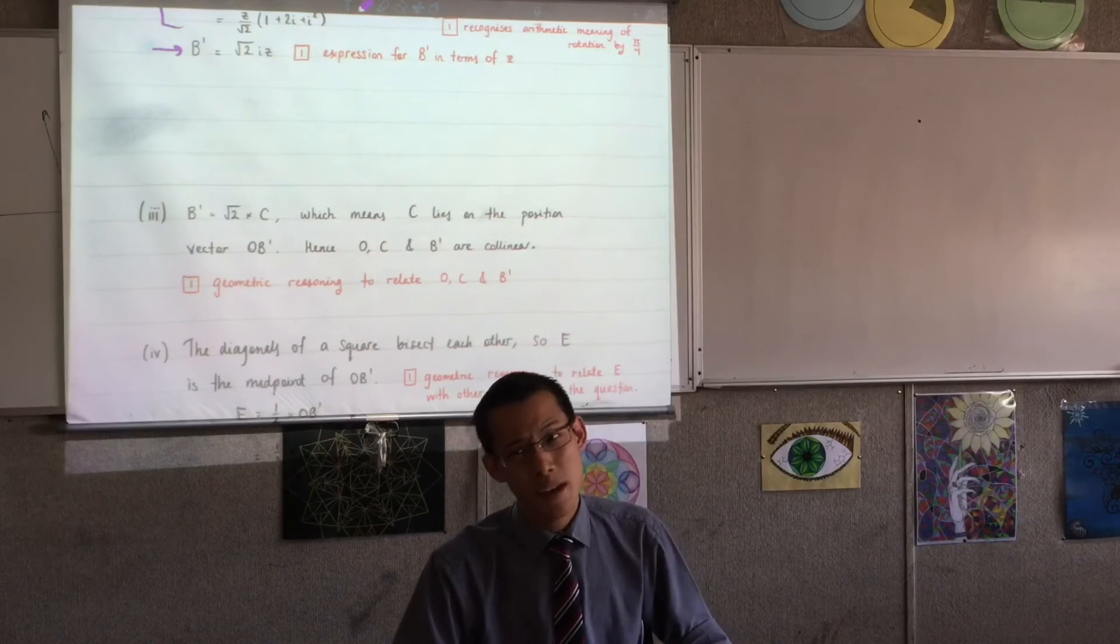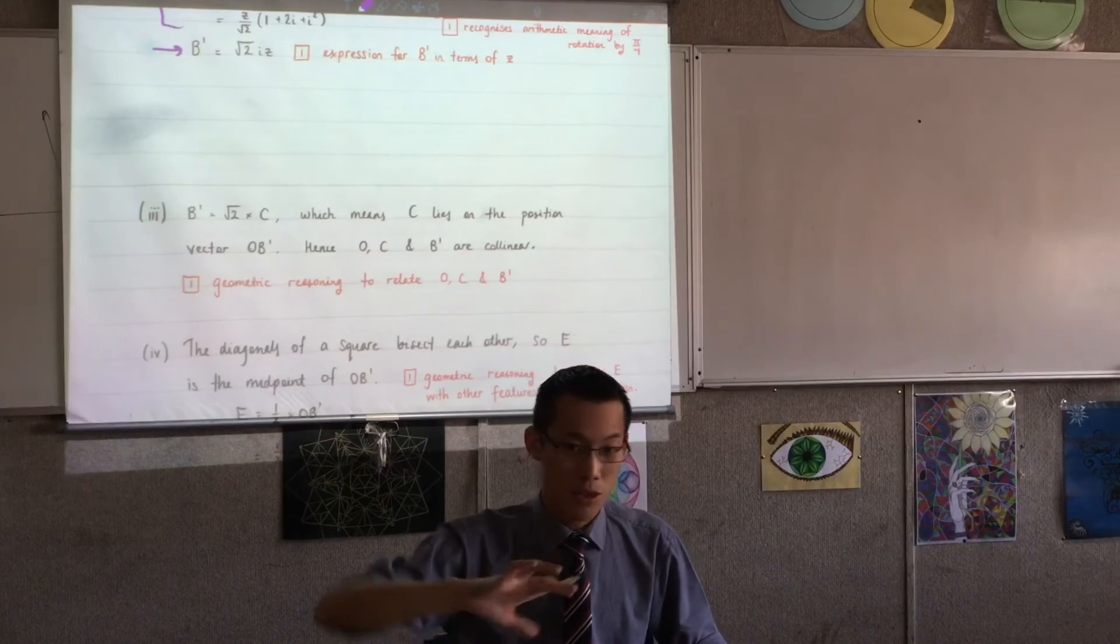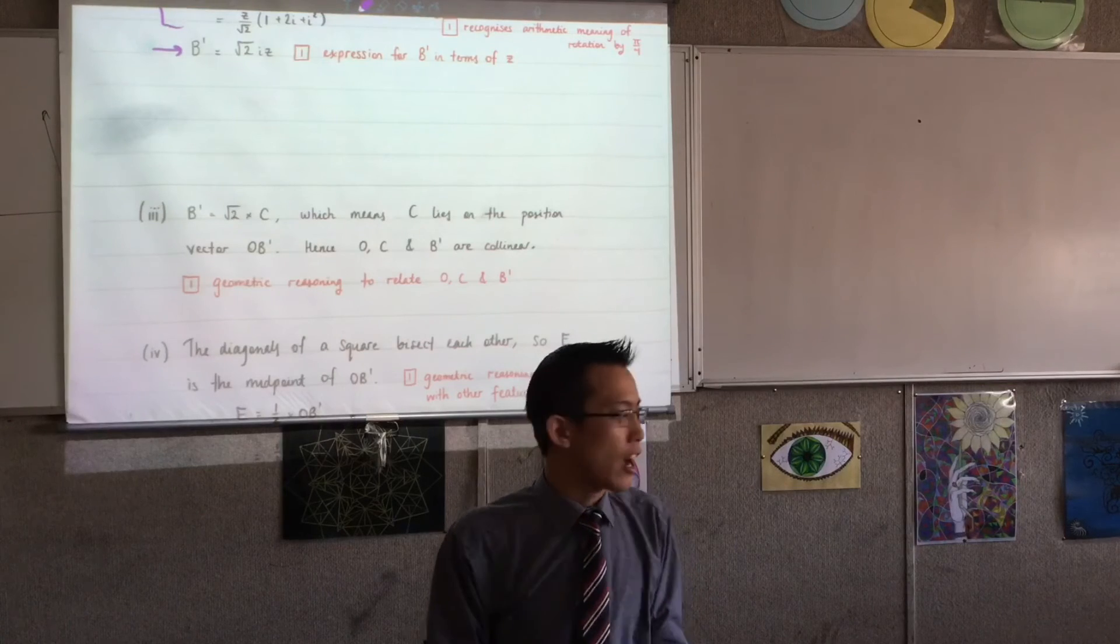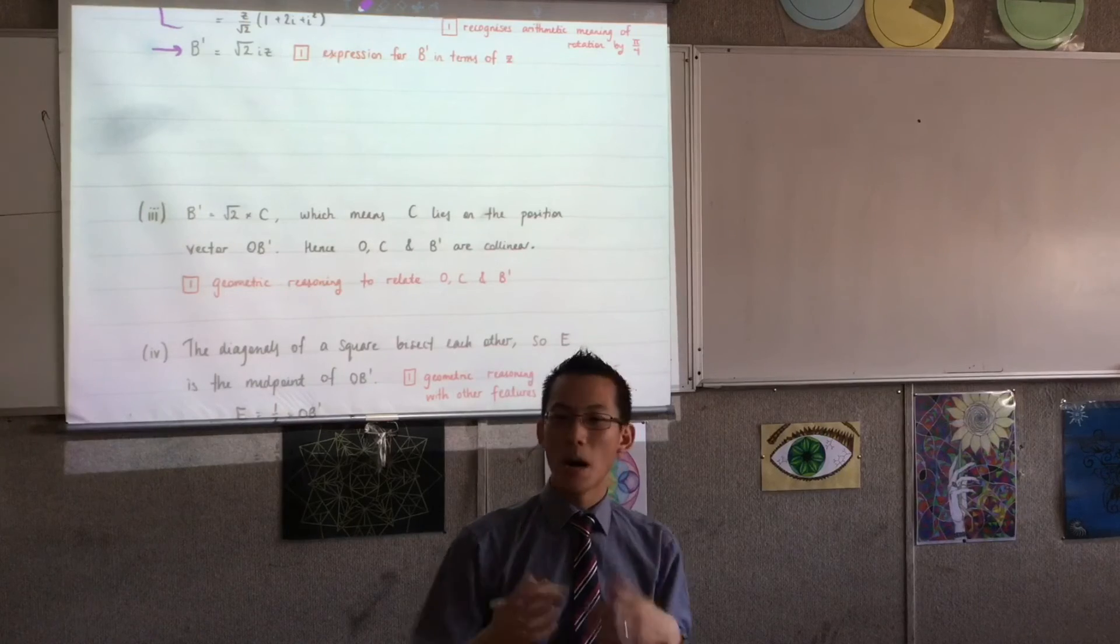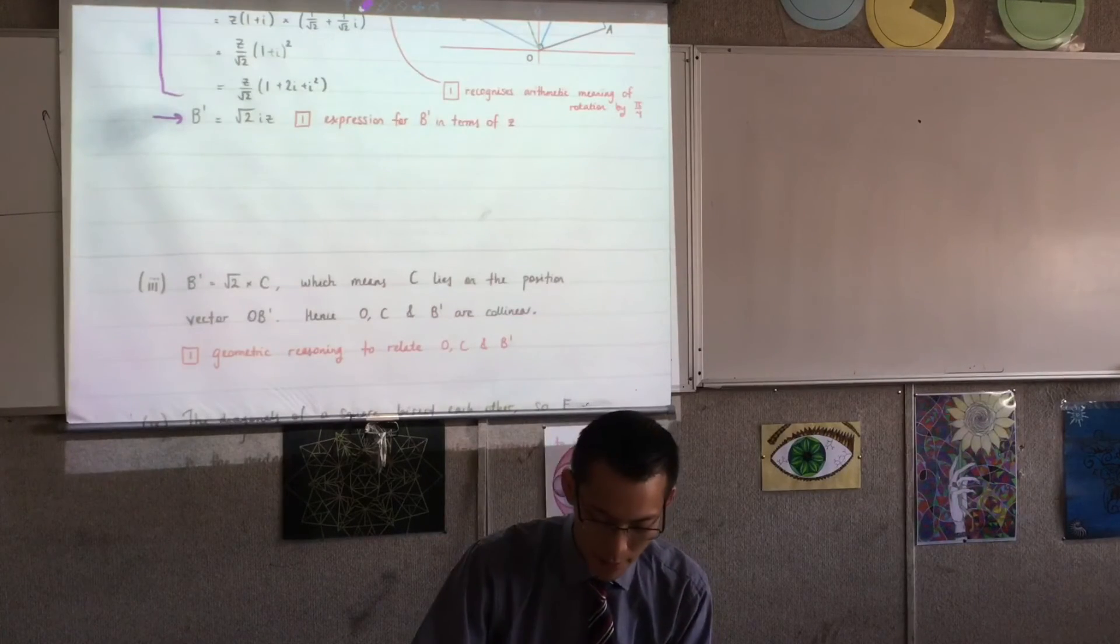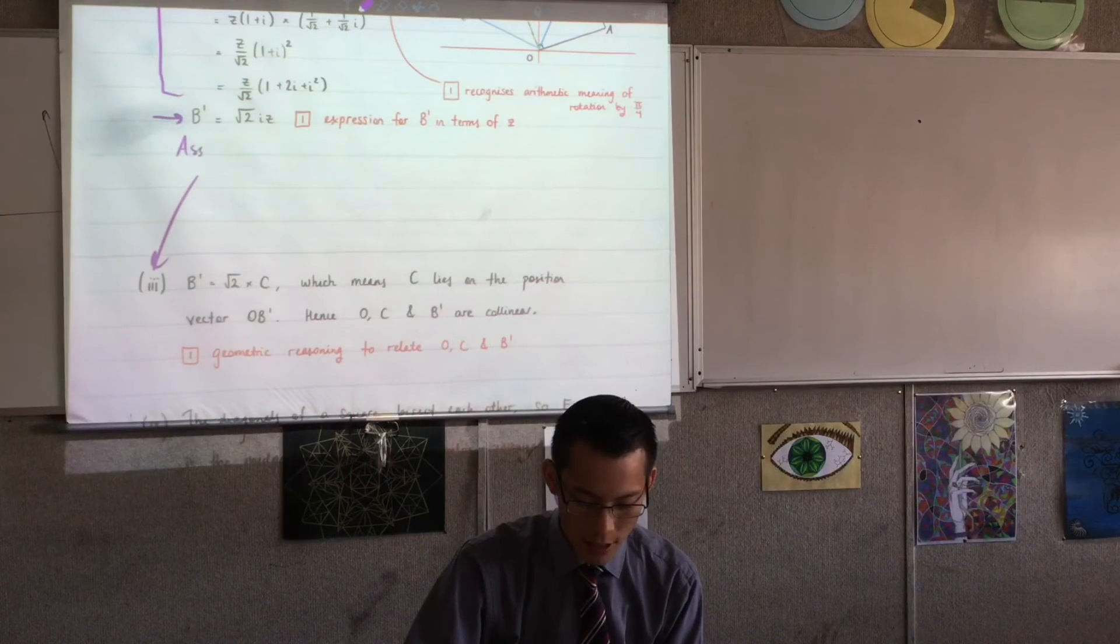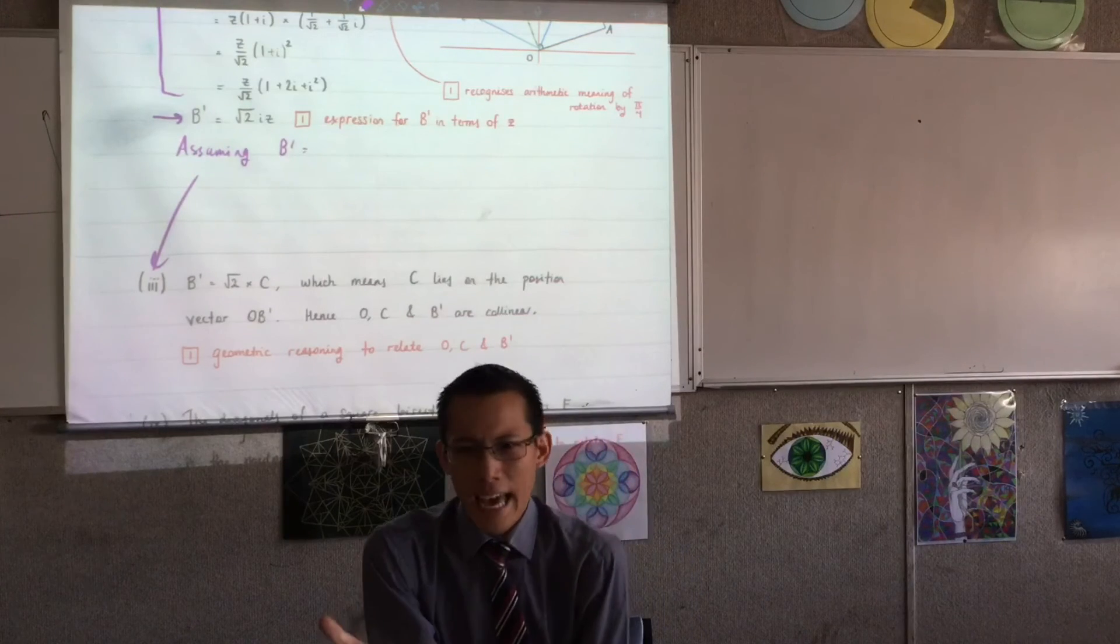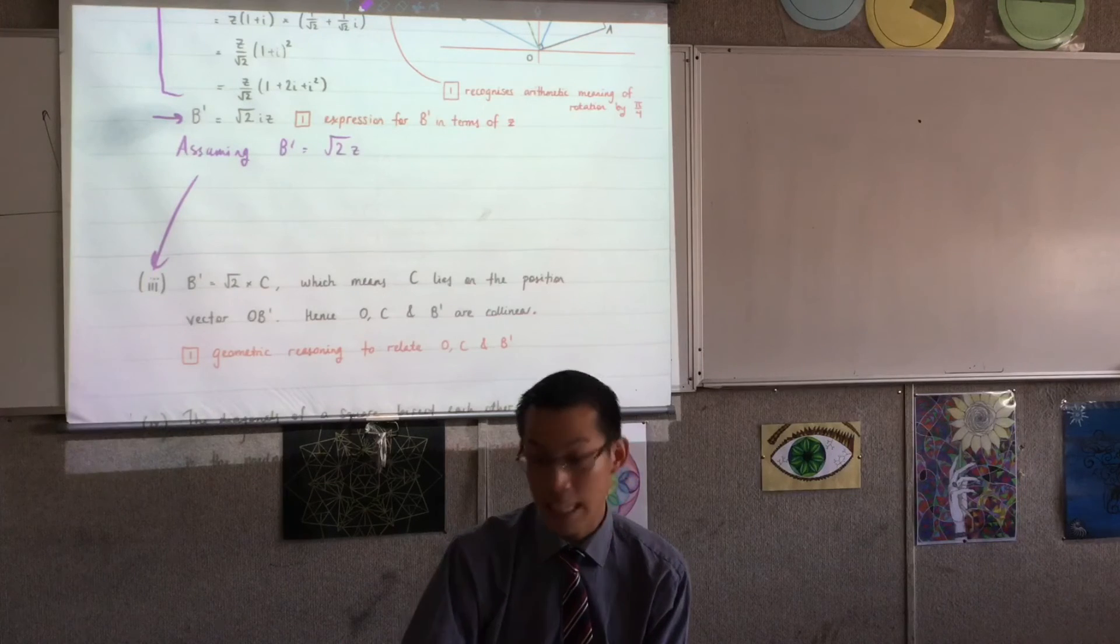So their rotation was just all wrong. Maybe they rotated the square about its own center instead of about O and so they came up with a completely different method for working out where the complex numbers were which wasn't valid with this because the rotation was about a different point. There was the first mark for recognizing, yeah, I know that I should multiply by a complex number to achieve that rotation and then the final mark was for just getting your expression for B dash.